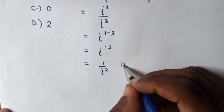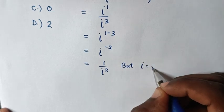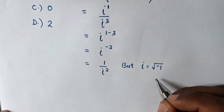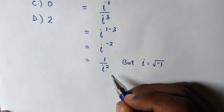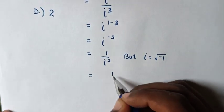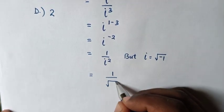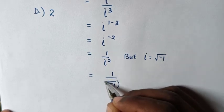This equals 1 over i². But i equals square root of -1, so substituting this into i, this equals 1 over (√(-1))².